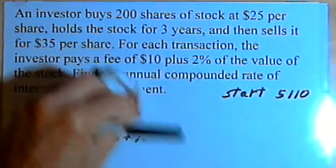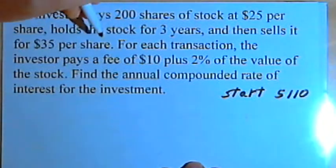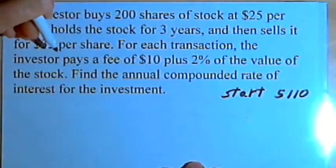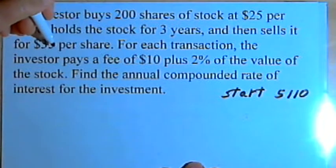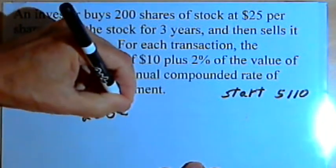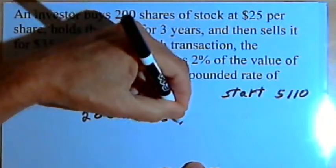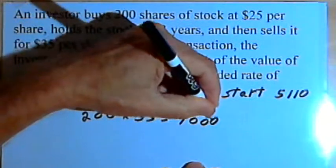Now let's find out what happens at the end of the problem, at the end of three years. He sold the stock for $35 per share. He had 200 shares and he sold it for $35, so it looks like he ended up with $7,000.